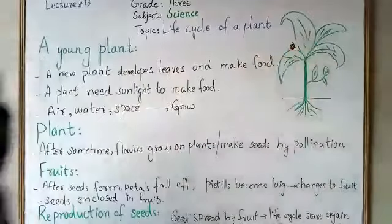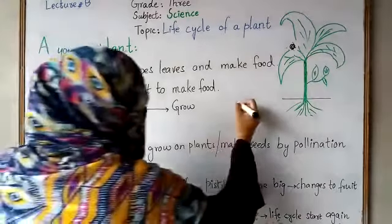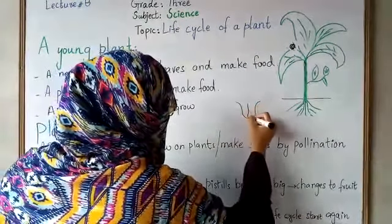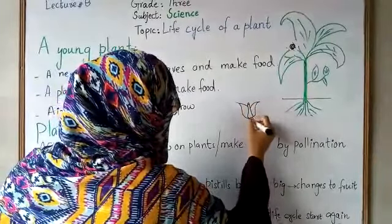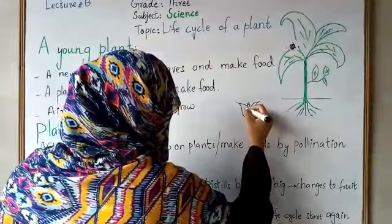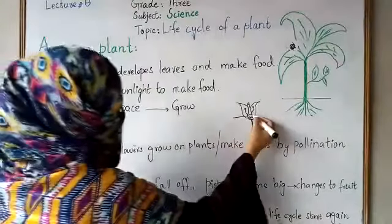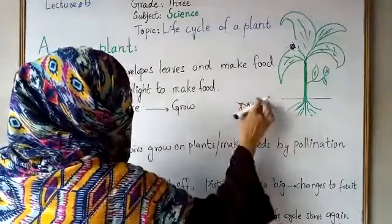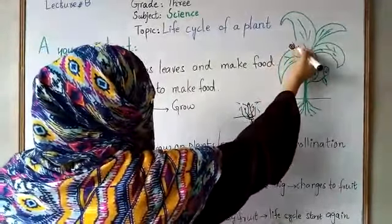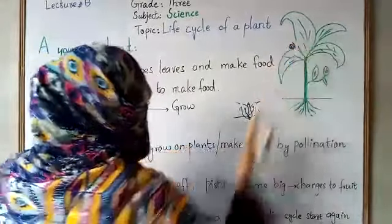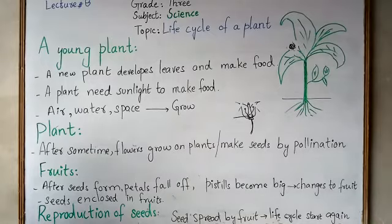Only the seeds remain in the pistil. In the previous lecture we studied about the pistil. This is the pistil — in this part seeds will form and the petals will fall off, and only the seeds will remain in the pistil. After the petals fall off, the pistil becomes bigger.